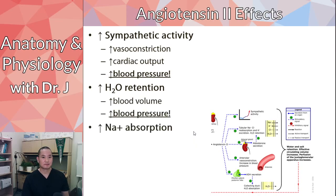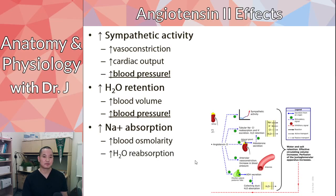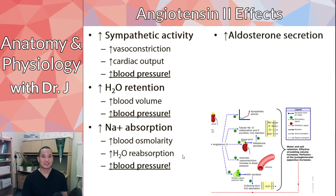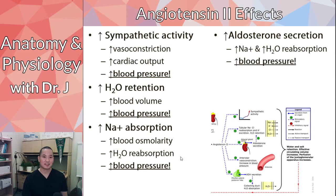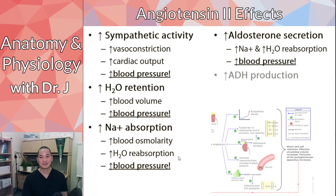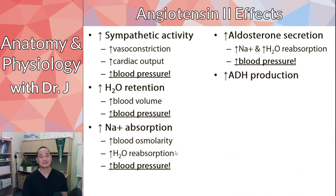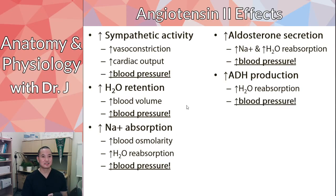Angiotensin 2 also increases sodium absorption — similar to aldosterone. Increased blood osmolarity increases reabsorption of water, thereby increasing blood pressure. It also stimulates aldosterone secretion, increasing both water and sodium reabsorption and raising osmolarity. Additionally, it increases ADH production, which retains more water and raises blood pressure. So angiotensin 2 is a very powerful increaser of blood pressure.